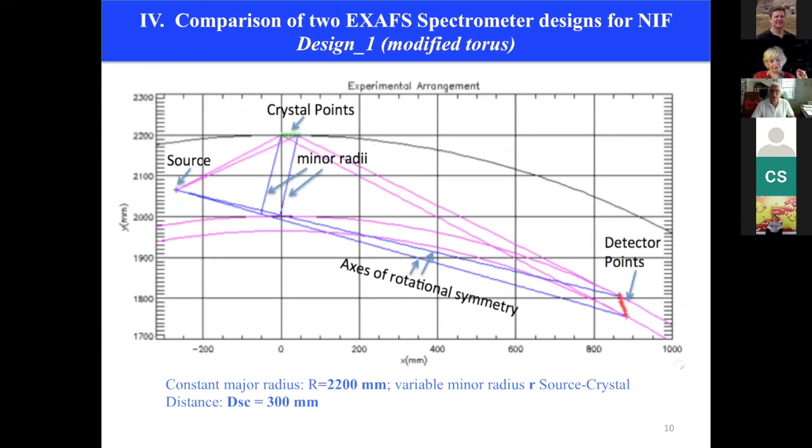You can build a spectrometer design on this principle. The principle is shown here. You have the source again, we call it a modified torus now. The incident rays of different wavelengths hit the crystal at different points. We require that all the images are associated with the Rowland circles which are associated with the Bragg reflecting crystal.